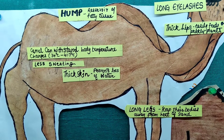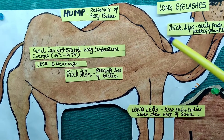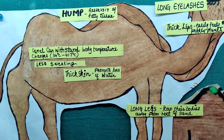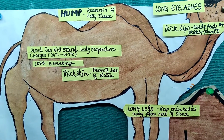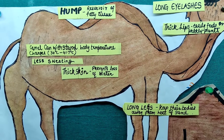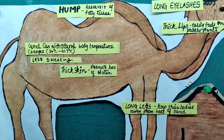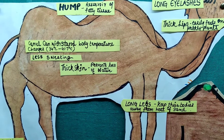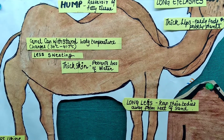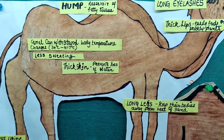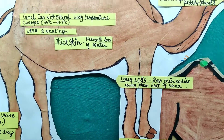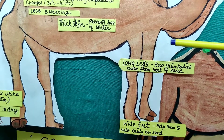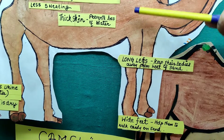The skin of the camel is thick and can withstand high body temperature changes — from 34 degrees to 42 degrees Celsius roughly. The camel also sweats less, so since sweating is less and skin is thick, the loss of water is prevented here.